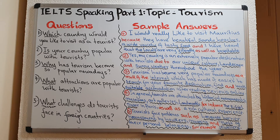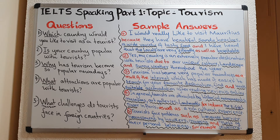You can answer this question by saying: I would really like to visit Mauritius because they have beautiful sandy beaches, a wide variety of tasty food, and I have heard that the locals are very friendly as well as hospitable. In that answer, I did not just identify the country. I identified the country and then I gave the examiner some reasons why I would like to visit that country.